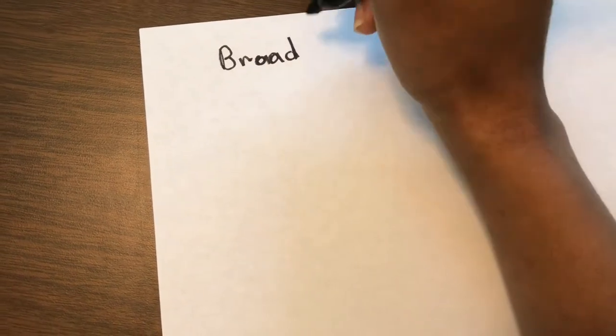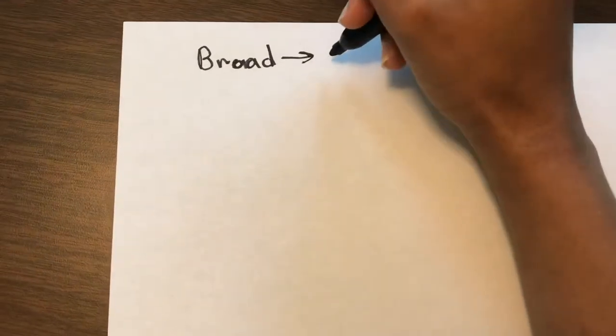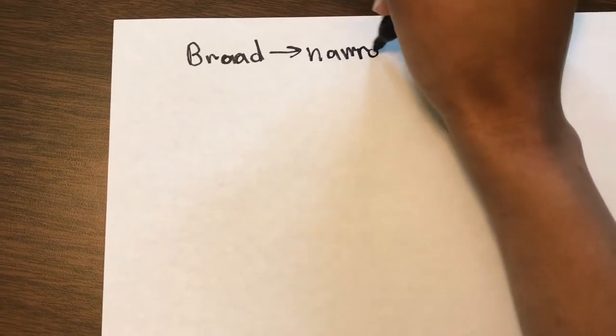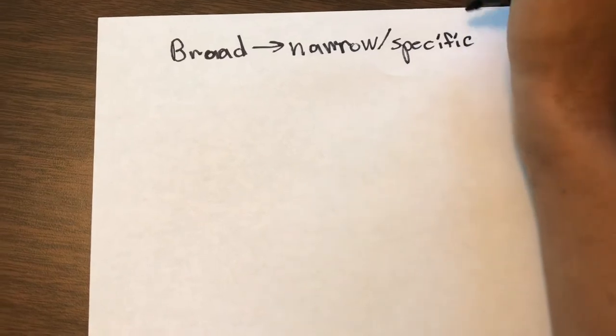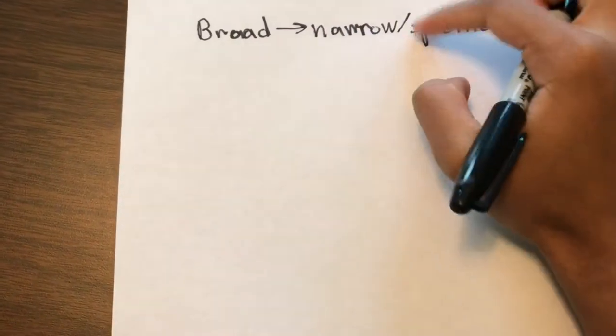All right, here we are. I actually realized that my board was way too shiny, so we're just going to go ahead and use this nice blank piece of paper here. So the topics that I chose — sometimes they work as the broader topic, sometimes they work as the more specific topic. What I mean by that is you're going to basically start with a broad topic and then you're going to transition to a narrow, more specific topic.